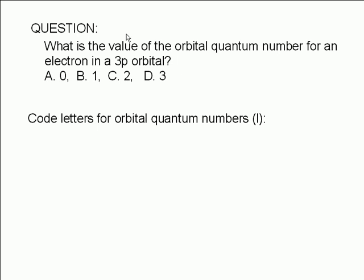It is customary to use code letters for the orbital quantum number L. The code letters are as follows: S for L equals 0, P for L equals 1, D for L equals 2, F for L equals 3, and G for L equals 4.